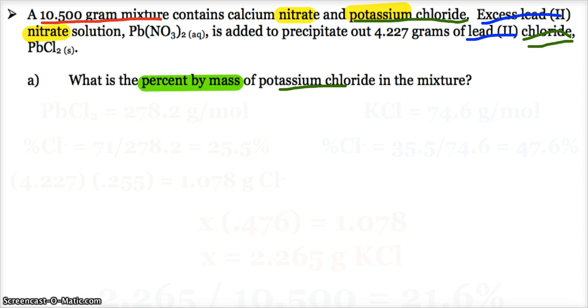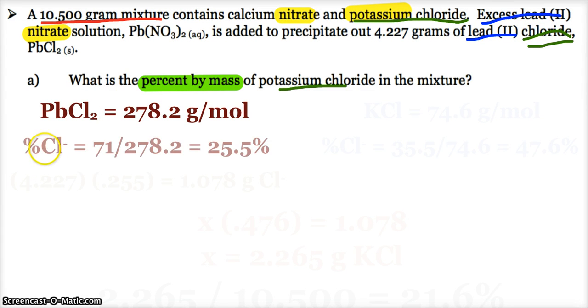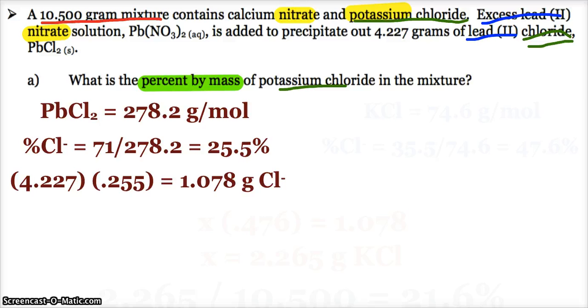Alright. So let's analyze our precipitate. Lead(II) chloride has a molar mass of 278.2. Lead(II) chloride everywhere on our planet has the same percent of chloride and lead in it. And since chloride is what's linking me to the potassium chloride, let's look at that. The percent chloride in lead(II) chloride is 25.5%. So what that means is 25.5% of my precipitate, the 4.227 grams, is chloride.